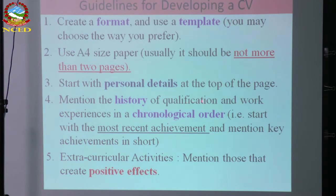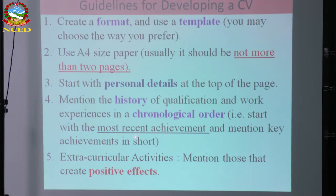Fourth: mention the history of qualifications and work experiences in chronological order — start with the most recent achievements first and mention key achievements in short. Chronological order means presenting the most recent first, for example 2015, then 2014, then 2012. Mention key achievements briefly because the employer doesn't have enough time to go through all the details.